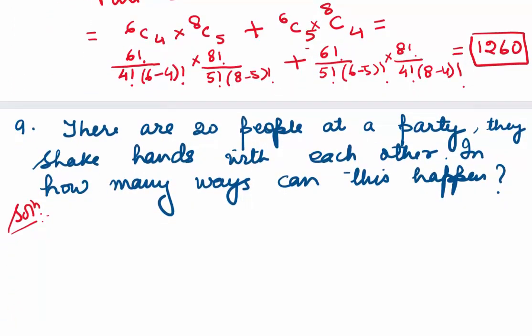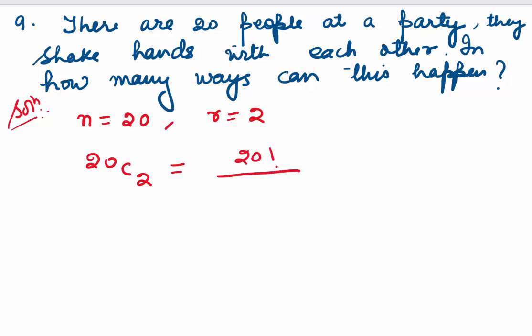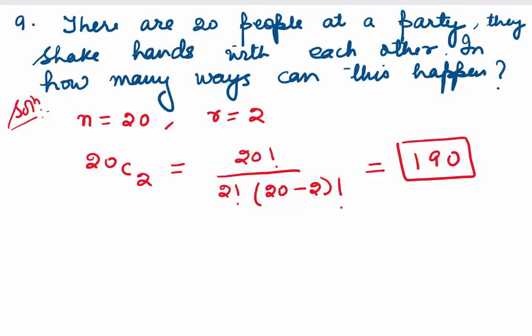Question 9: there are 20 people at a party and they shake hands with each other. Two people are needed for a handshake, so N equals 20 and R equals 2. The number of handshakes is 20C2 equals 20 factorial divided by 2 factorial times 18 factorial, which simplifies to 190.